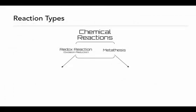This video is going to be the first in several that describe different reaction types. First off, let's take a look at how we classify chemical reactions. There are two main categories that we'll look at: redox reactions — short for oxidation reduction — and metathesis reactions.